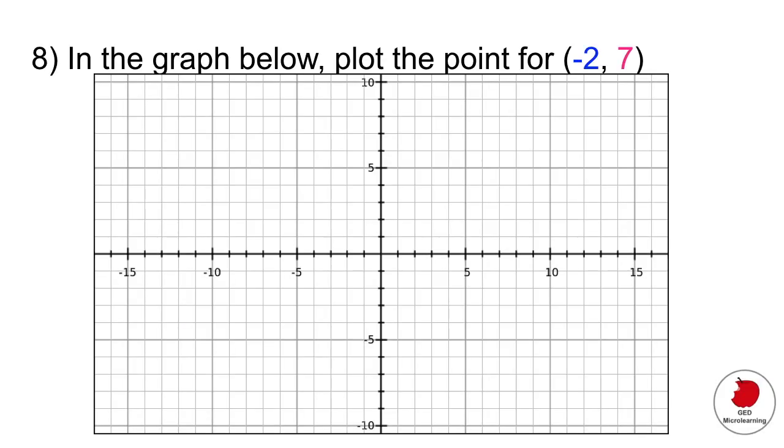Then for the y value, we start at zero and we're going to move up to seven. At the point where these two arrows would intersect, that's the coordinate minus 2 comma 7, which is where you would make a little dot in your test.